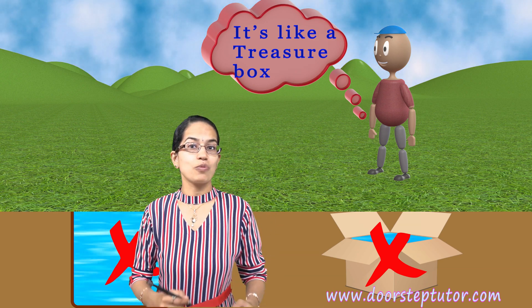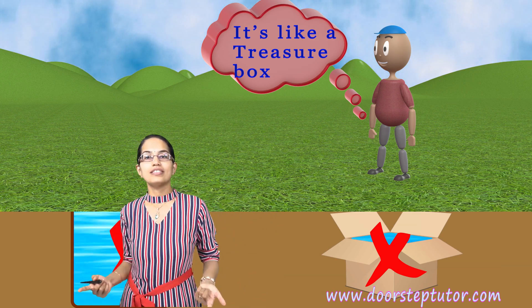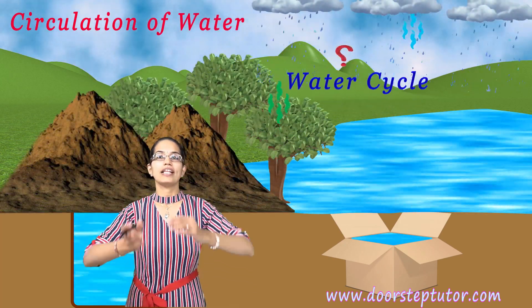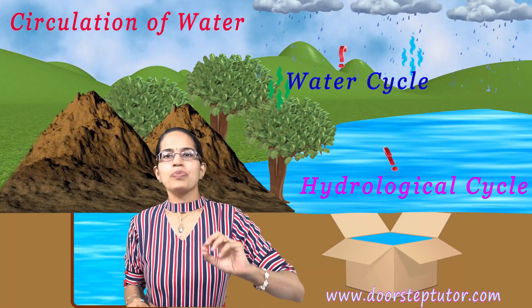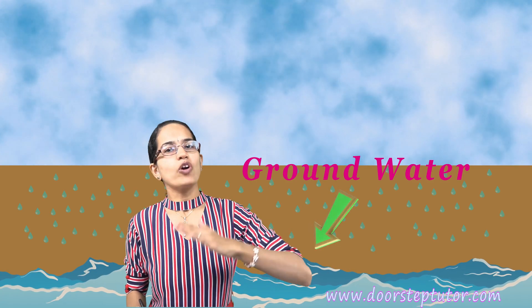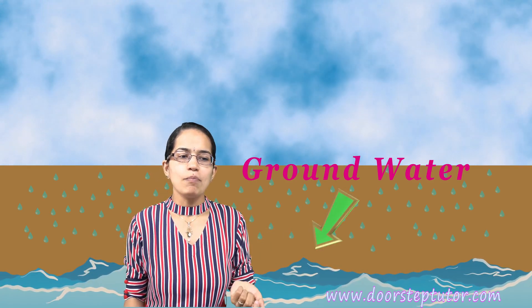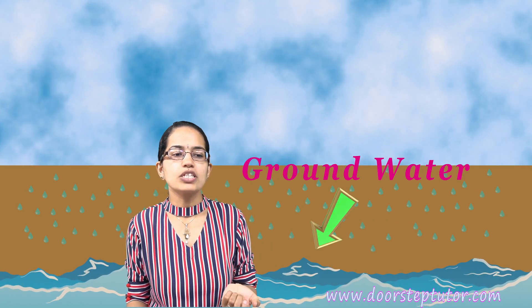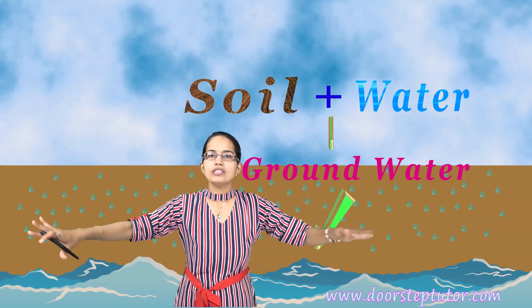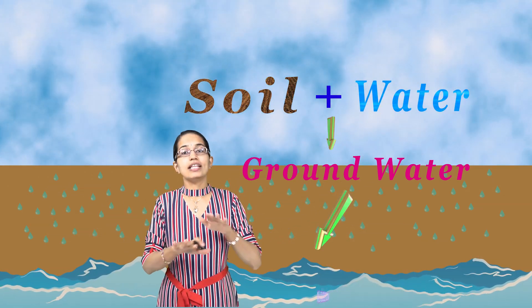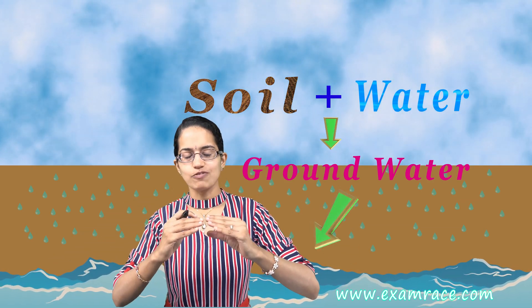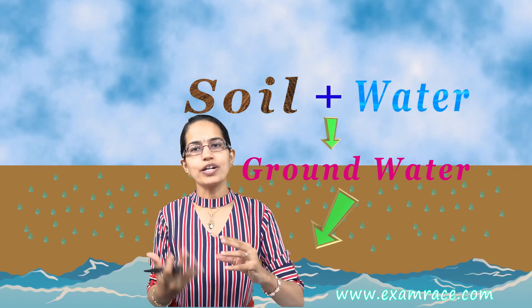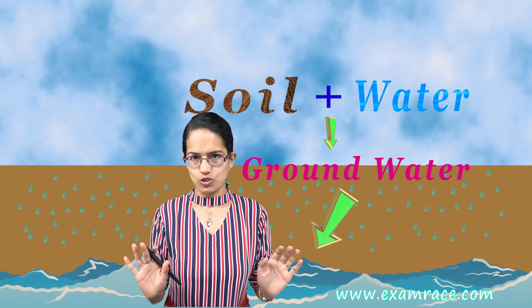If that were true, how do we understand the circulation of water, the water cycle and all the hydrological cycles that exist? So definitely when we are talking about groundwater it is much beyond that. What it is, is a mixture of soil and water. Across the whole area it's like a continuum, and this continuum focuses on a component which is mixed with water beneath the surface of the earth.